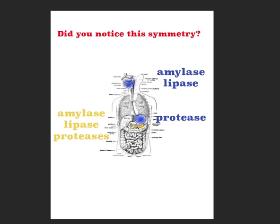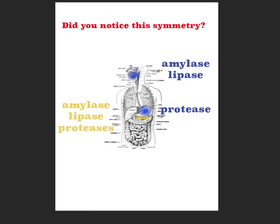One last thing: there are two sets of basic enzymes released in the digestive system. The first set is in the mouth and stomach, and the second set is in the pancreas. Together they cover all the basic biomolecules: amylase and lipase from the mouth, protease from the stomach, then amylase, lipase, and protease from the pancreas. That's the last GI mnemonic — I covered what I think are the hardest concepts to remember since these hormones don't really tell you much about themselves. Hope you found that useful — cheers, have a good day!